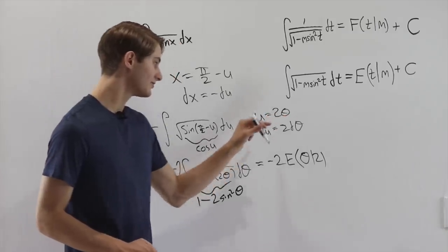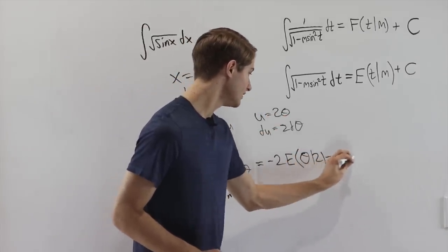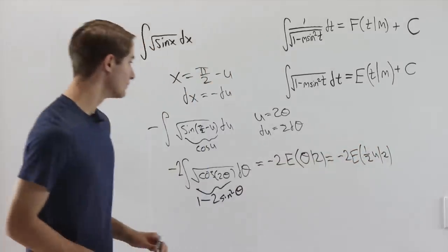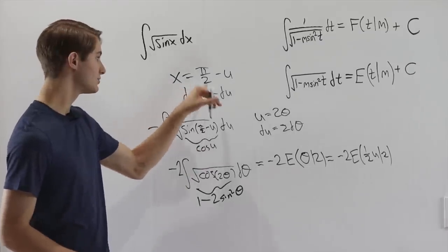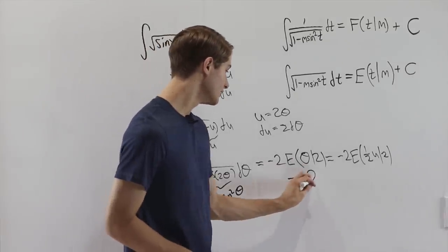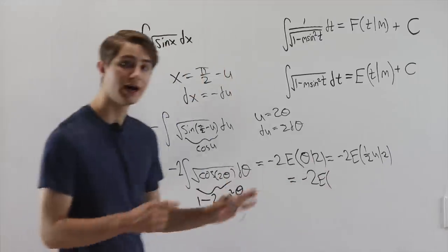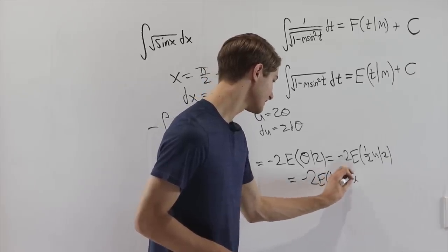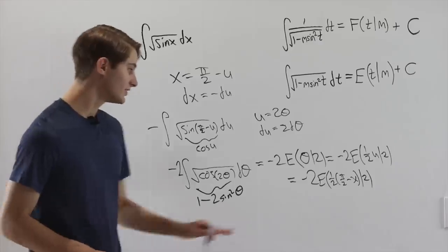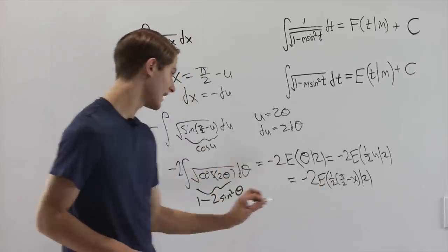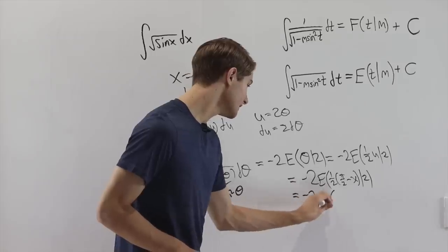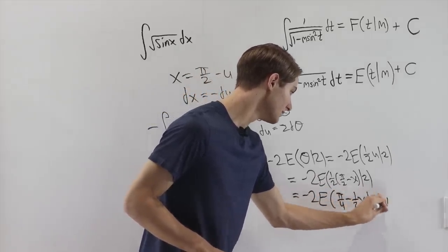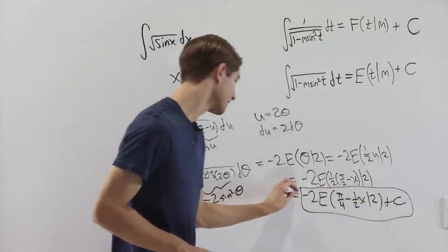and now all we have to do is get back from theta to x. We can start out by looking at the fact that u equals 2 theta, and therefore theta is going to be 1 half u. Now if we go back one more step to x, x is pi over 2 minus u, and that also means that u is going to be pi over 2 minus x. So we have one half of pi over 2 minus x, and then 2, and our final step is going to be to distribute this one half through everything. So we get negative 2 E of pi over 4 minus 1 half x, and 2 plus c. That is our final solution.